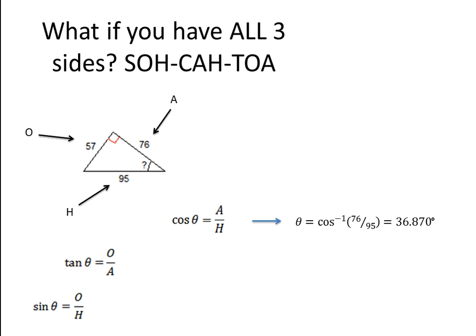Now tangent — opposite over adjacent — so 57 over 76. Inverse tangent of 57 over 76 gives theta equal to 36.870 degrees, just like I got for cosine. For sine — opposite over hypotenuse — so 57 over 95. Inverse sine of 57 over 95, and once again we get the angle measurement of 36.870 degrees. If they are not the same, that means you did something wrong.